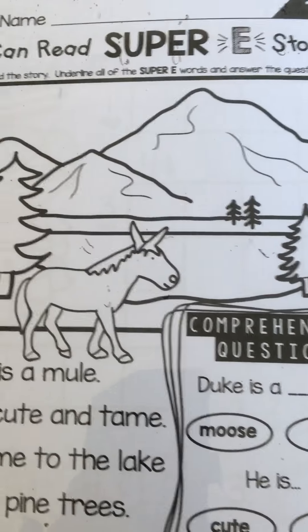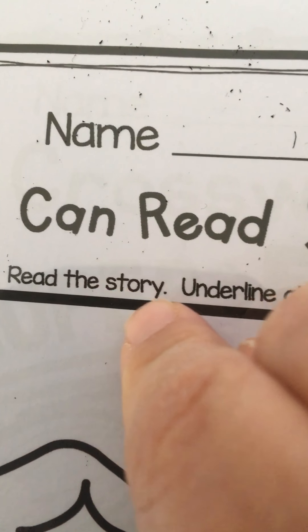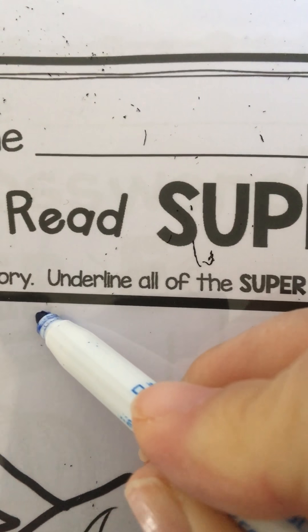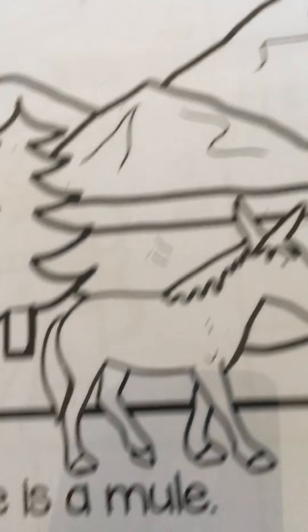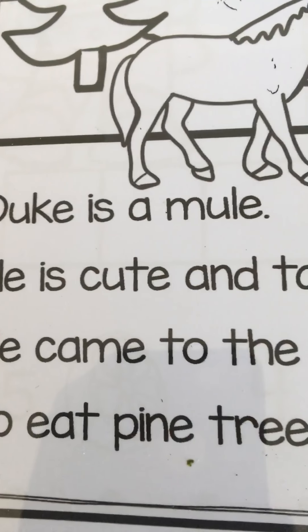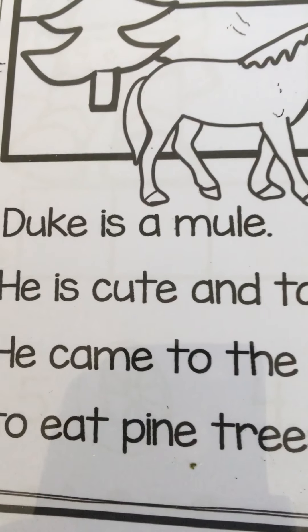Let's read the directions. Read the story. Underline — underline is like a line underneath — underline all of the super E words and answer the questions. So the words that have a silent E, we're going to underline.